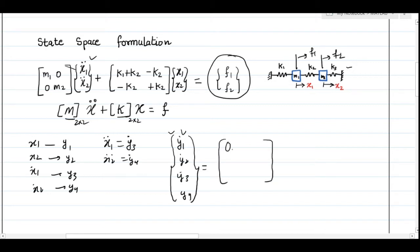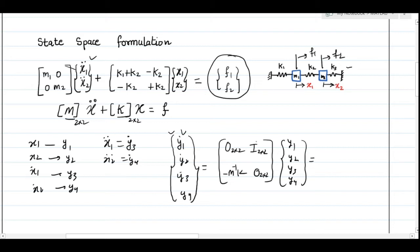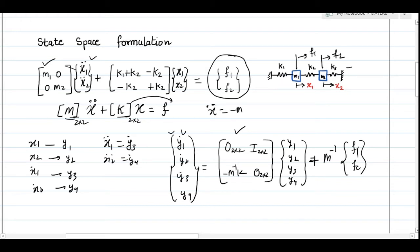The coefficient matrix contains a null matrix of 2×2, a 2×2 identity matrix, then M-inverse·K, and a 2×2 null matrix, applied to the state vector [Y1, Y2, Y3, Y4]. For forced vibration, we add M-inverse multiplied by the force matrix. This comes from rearranging: X-double-dot = −M⁻¹·K·X + M⁻¹·F. So the equation gains a term M⁻¹·F on the right-hand side.